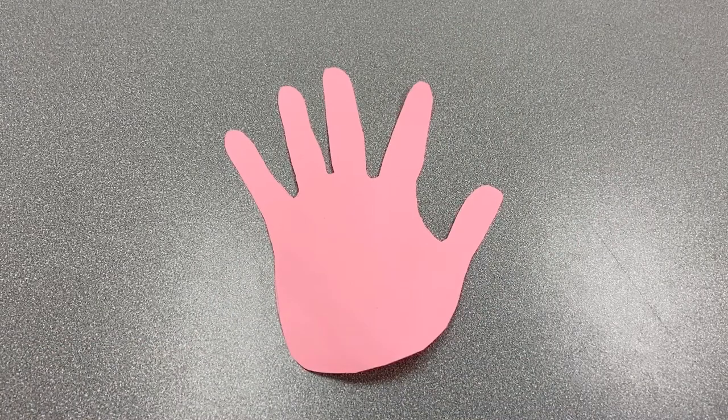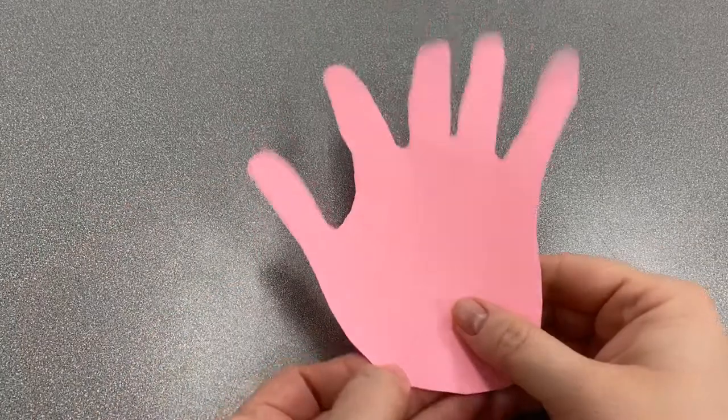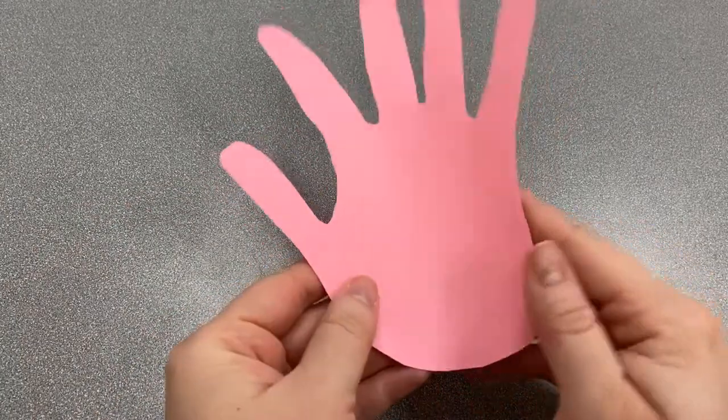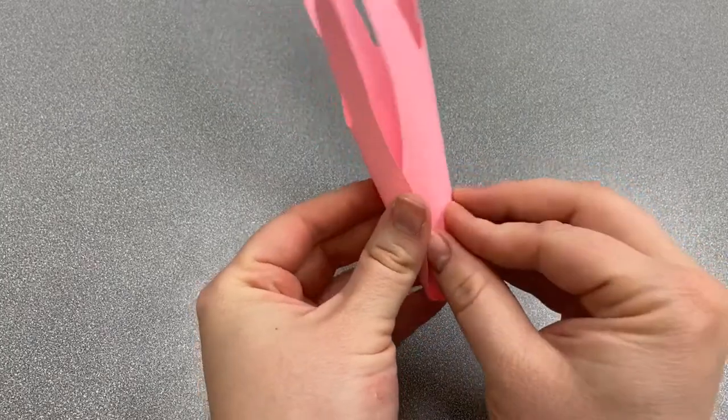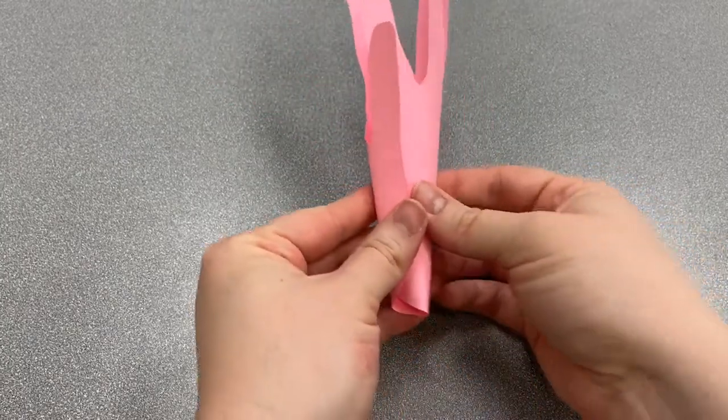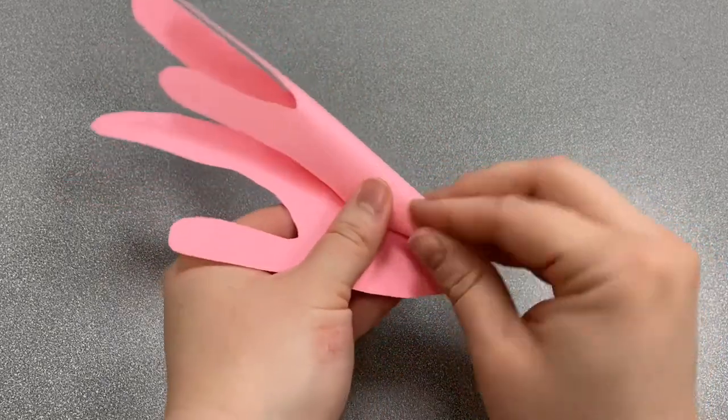Now we're going to start making the top of our flower. Take your handprint and turn it over so that it faces this way. Start rolling the flower so that the end is a small cone. It's okay if it takes you more than one try to do this.